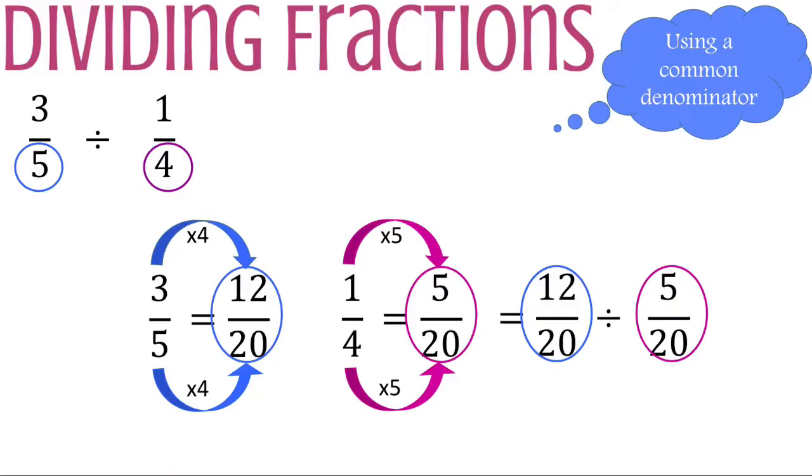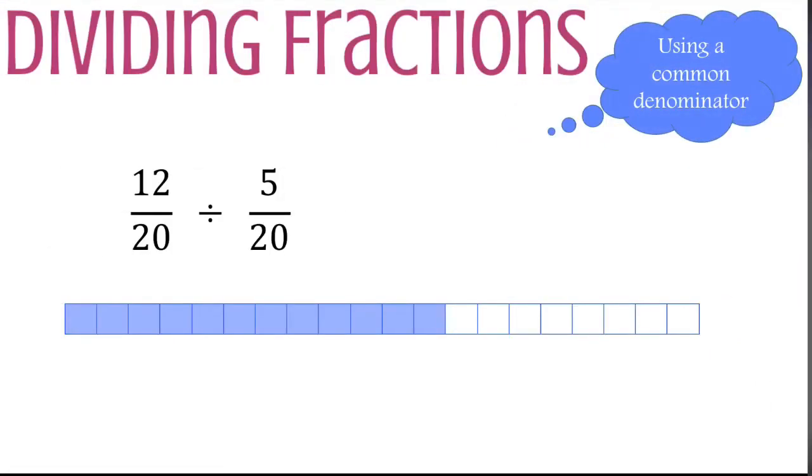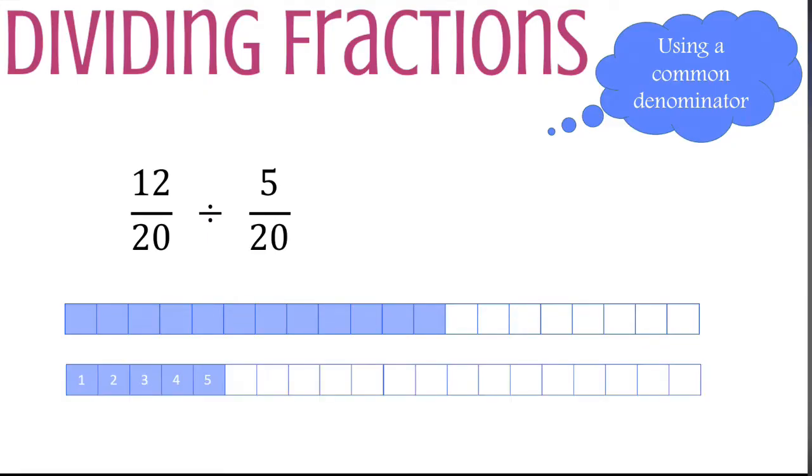So our new division problem is now twelve over twenty divided by five over twenty. Here we are going to model twelve-twentieths divided by five-twentieths. You will see that we have shaded twelve out of twenty to show you how much is represented by twelve-twentieths. Here we have five shaded out of twenty. We're going to break this five out of twenty down into its five out of five piece because the question here is how many times can that five-twentieths fit inside the twelve-twentieths?